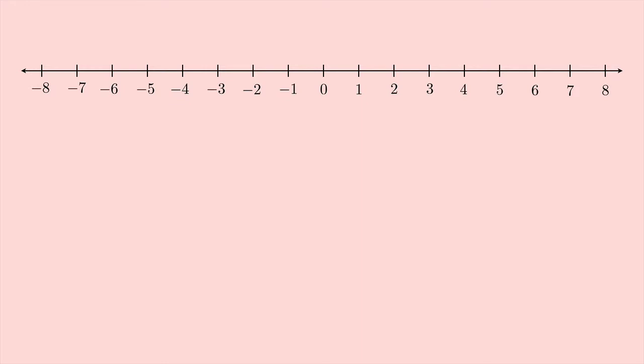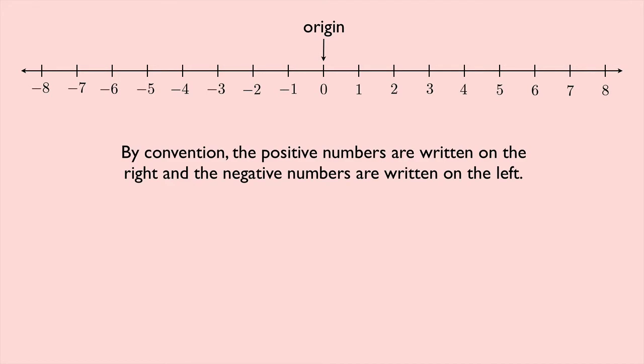In the middle, where 0 is, we call that the origin. And by convention, the positive numbers are written on the right, and the negative numbers are written on the left.